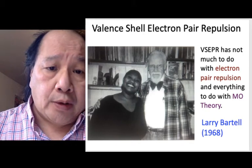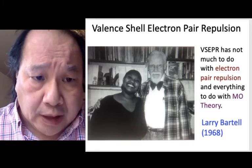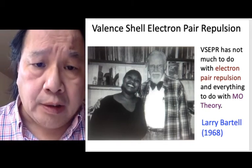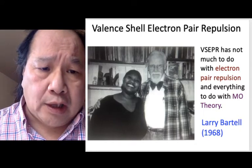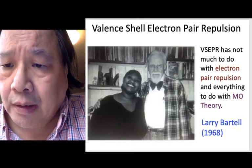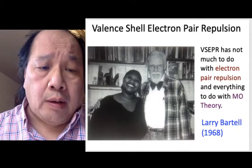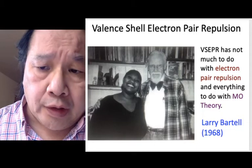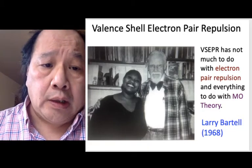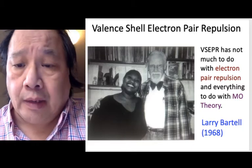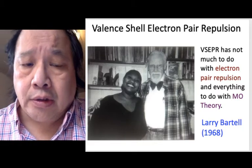I wasn't quite sure what to do, but I did have one thing I could do: I was able to ask for who I would like to be the chair of my tenure committee at the University of Michigan. I decided I would go for Larry Bartel, who was not a man I'd ever talked to, but he was the best chemist in the department. He then organized the letters and everything in my tenure review, and I did get tenure. I owe it entirely to Dr. Bartel.